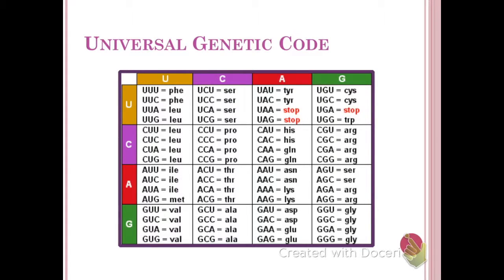The first thing that's important to keep in mind when we discuss genetically modified organisms is the universality of the genetic code. The genetic code is the same for all known organisms, therefore base codes for the same amino acids turn into the same proteins universally.